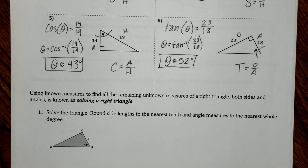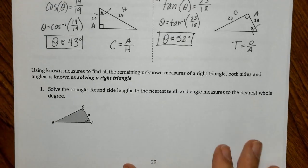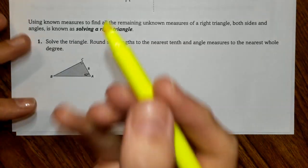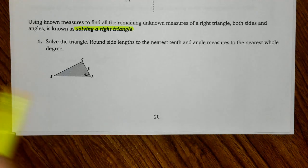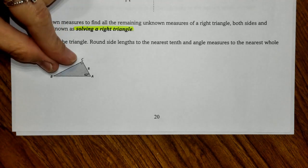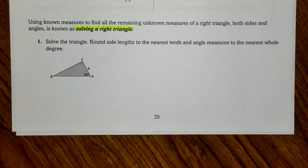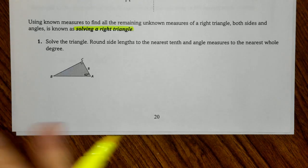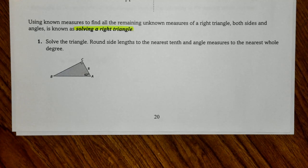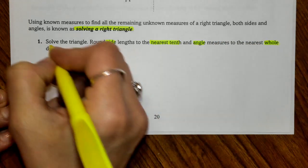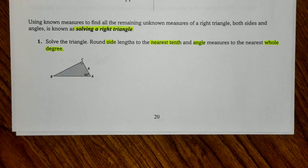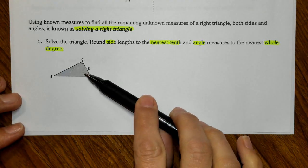With all these trigonometric functions we've been finding one side or just the angle. But with a side and an angle we can do what's called solving a right triangle — this means finding everything missing. So on number one, the only example here, we are going to solve the triangle — finding both BC and BA, and also finding angle B. The side lengths will be rounded to the nearest tenth, and the angles to the nearest whole degree. Starting with our reference angle at 62 degrees.